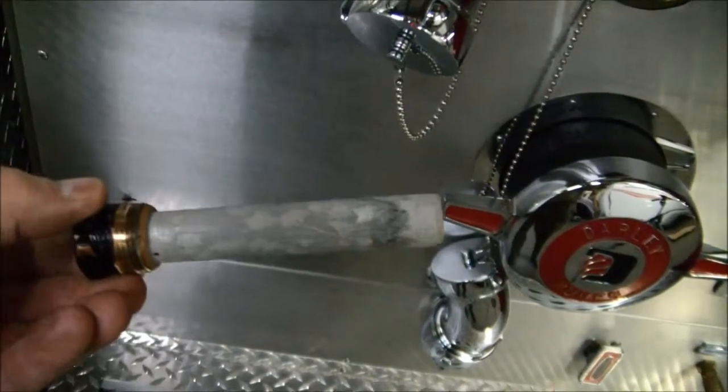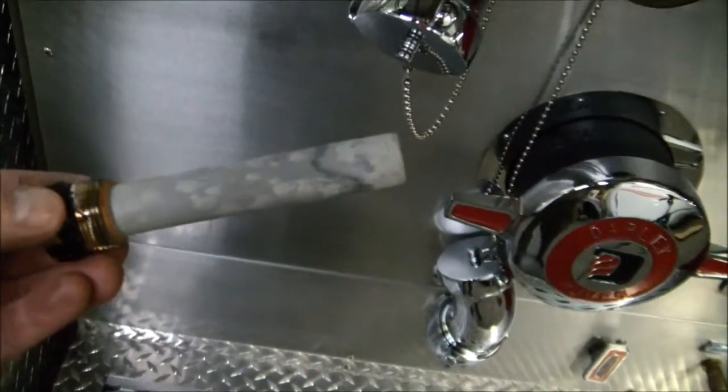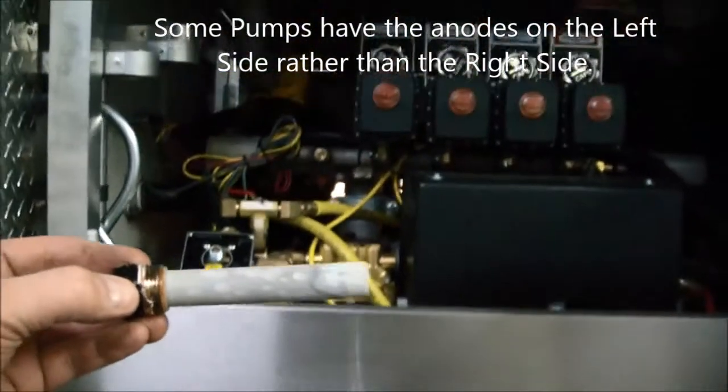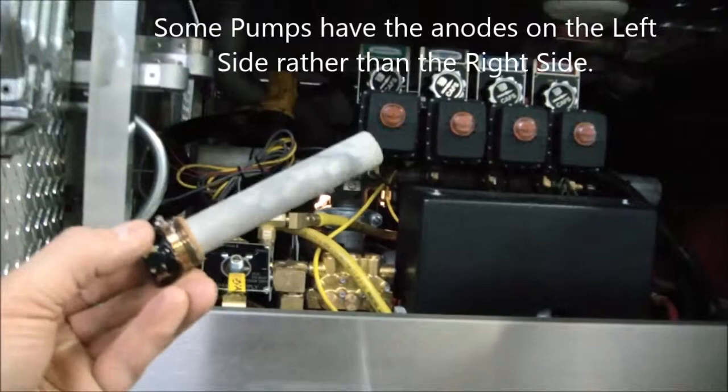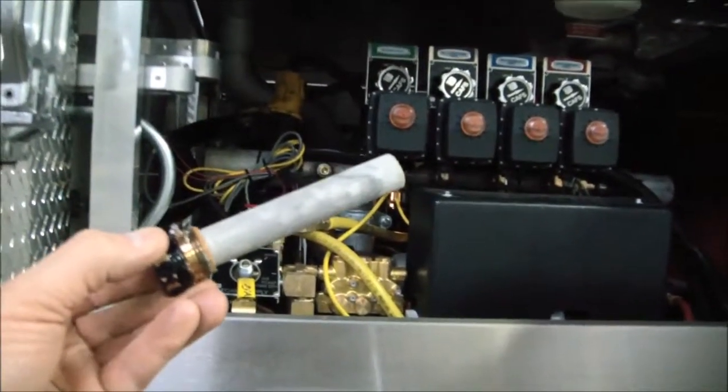Get a light in there and you can pretty easily see what kind of condition that anode is in without actually having to go so far as to remove it, but I wanted to show you that it is physically possible to remove that anode from the vehicle using just a ratchet and a socket and within just a few minutes.